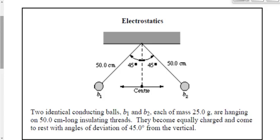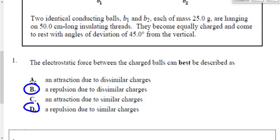Okay, let's have a look here. It says we've got two identical conducting balls, B1 and B2. Each of them has 25 grams. They're hanging on a 50-centimeter long insulated threads. They become equally charged, and come to rest with angles of deviation of 45 degrees from the vertical. And you can see that all labeled in the diagram. And then it says the electrostatic force between the charged balls can best be described as what? Is it going to be attraction or repulsion? It's got to be repulsion, right? It has to be repulsion, otherwise these things aren't going to stay spread apart. So it's either going to be B or D. Is it repulsion due to dissimilar charges or similar charges? We know what this is because we're told in the question that it says they become equally charged. So we know it's like charges, but even if it didn't say that, we'd know they were like charges because they're repelling each other. So the answer has got to be D here, repulsion due to similar charges.